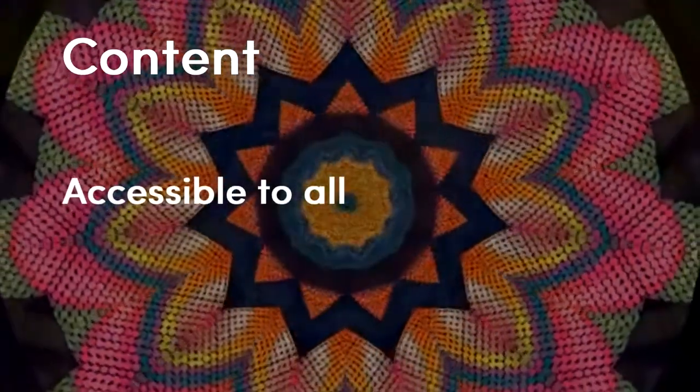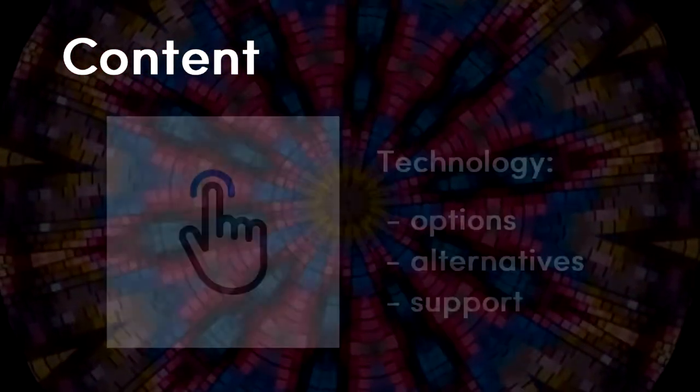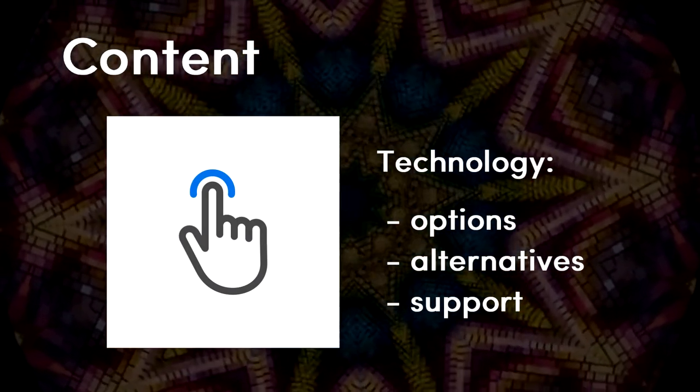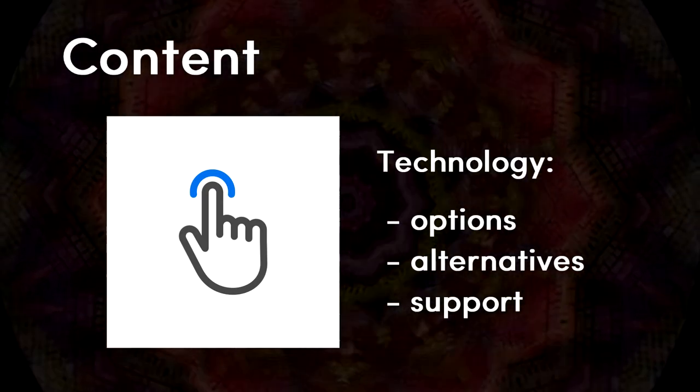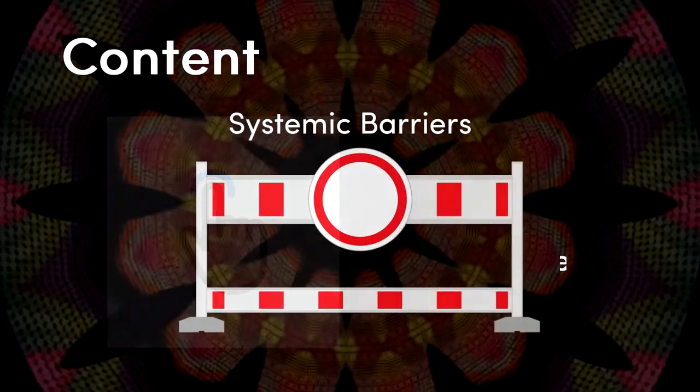Now dive in and take a good look at all the required and optional content in your course. Ensure that everything is accessible to all learners. Consider something like access to technology. Offer options, alternatives, and supports, because all students may not be on equal footing when it comes to technology access. Be sure you do not create a systemic barrier.